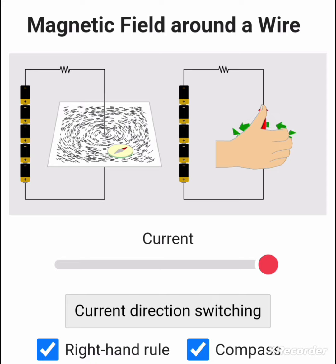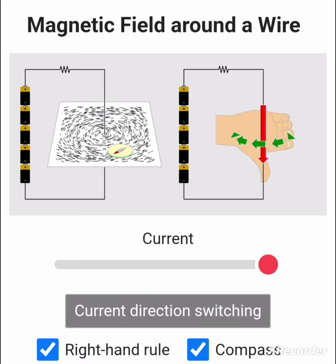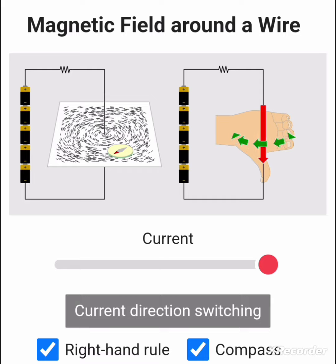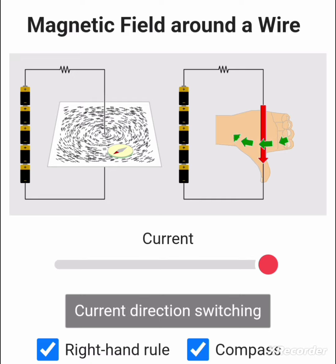Let's switch the direction of current — the direction of the magnetic field will also reverse. Again, with the help of the right-hand thumb rule we can find out the direction of the magnetic field around the current-carrying conductor. It's a really nice simulation to understand the right-hand thumb rule and magnetic field around a current-carrying conductor.